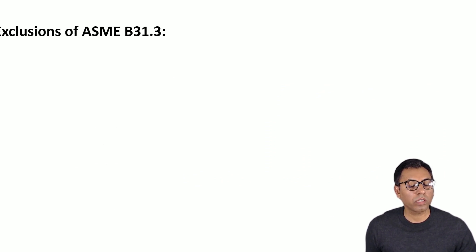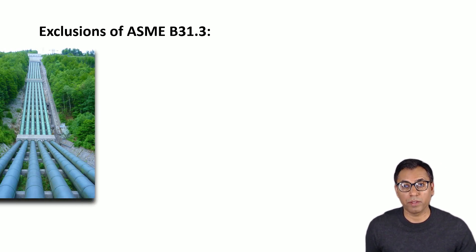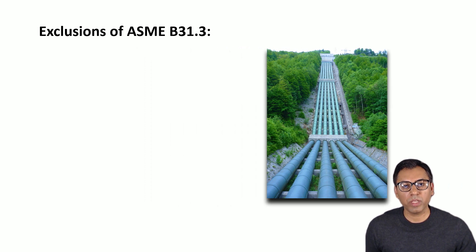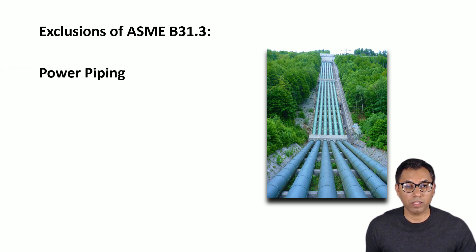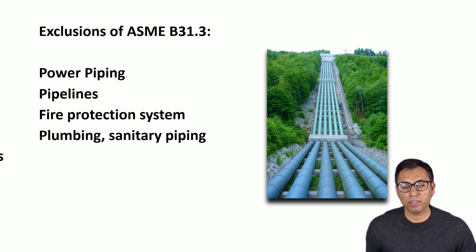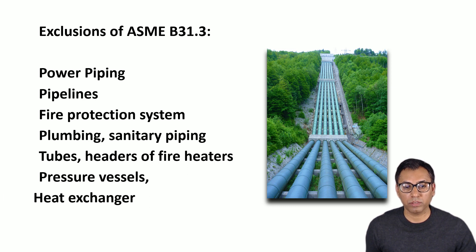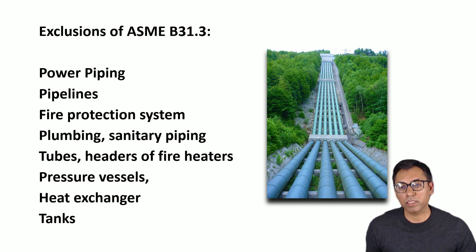Now let's talk about the exclusions — where ASME B31.3 piping code does not apply. In the following cases, B31.3 is excluded: piping used in power and boiler systems, pipelines, fire protection systems, plumbing and sanitary piping, tubes and tube headers of fired heaters, pressure vessels, heat exchangers, and tanks. In these categories, B31.3 does not apply.